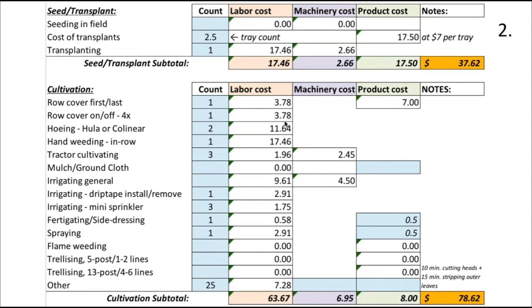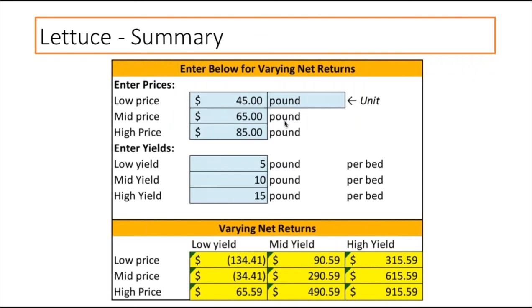So here's where I took it after I got to that page: I get paid a range of prices for lettuce — it can be as low as 45, it can go up to a hundred. I made myself a simple sensitivity formula where I can plug in three prices and three yields and it shows me those different returns. If you're getting paid a low price and get a low yield, obviously you're losing money. If you get a high price and a high yield, you're making more money. It's just interesting to know what that range of potential is for any particular crop.